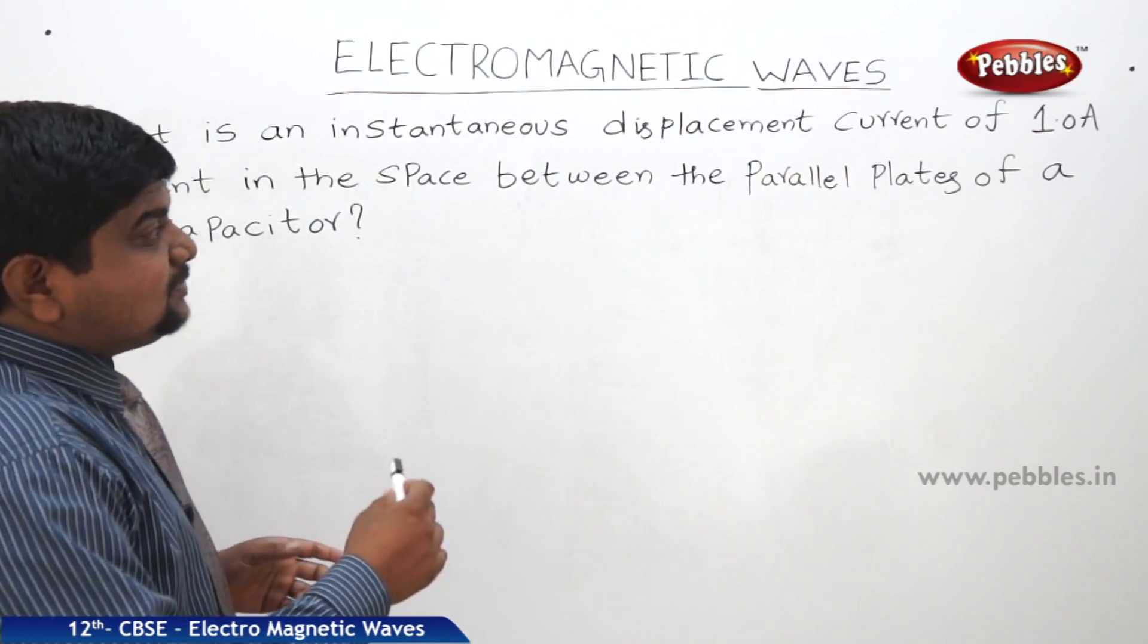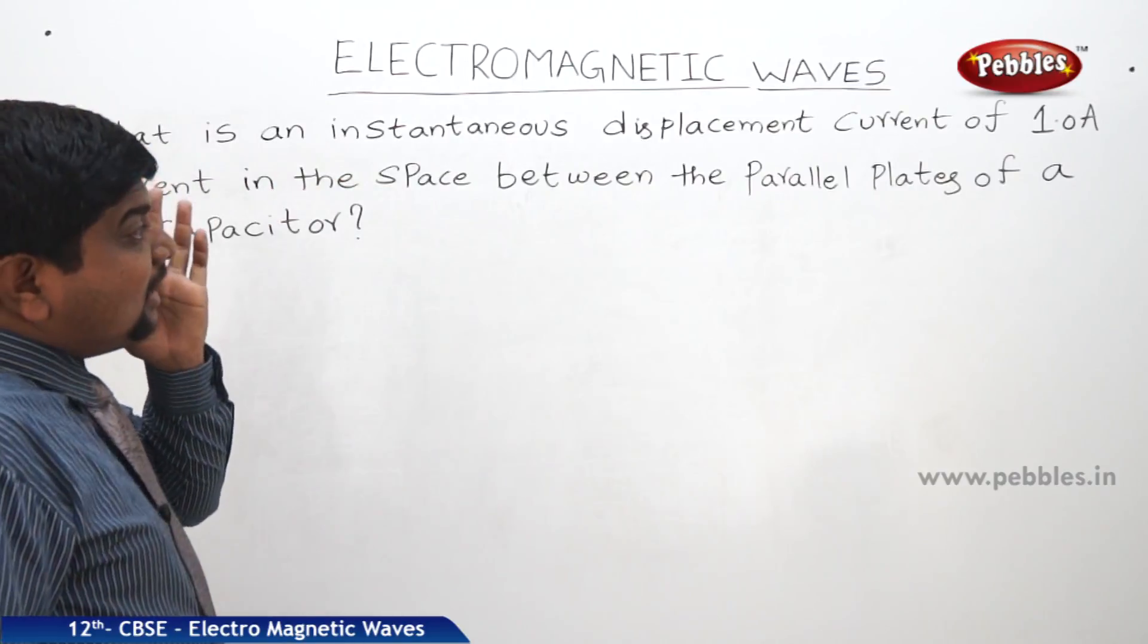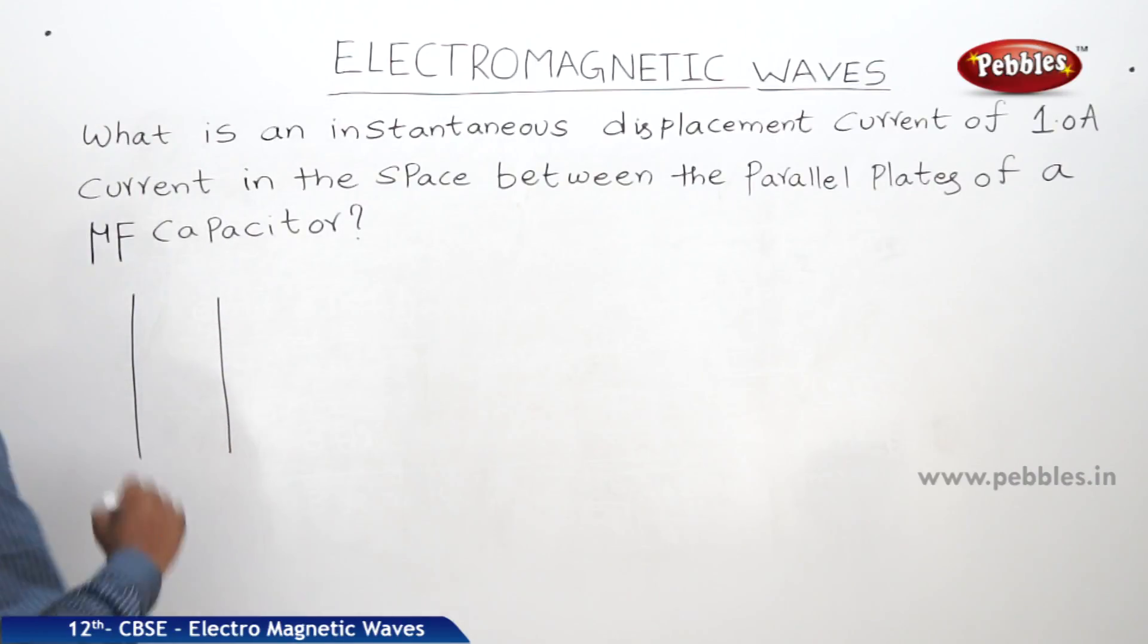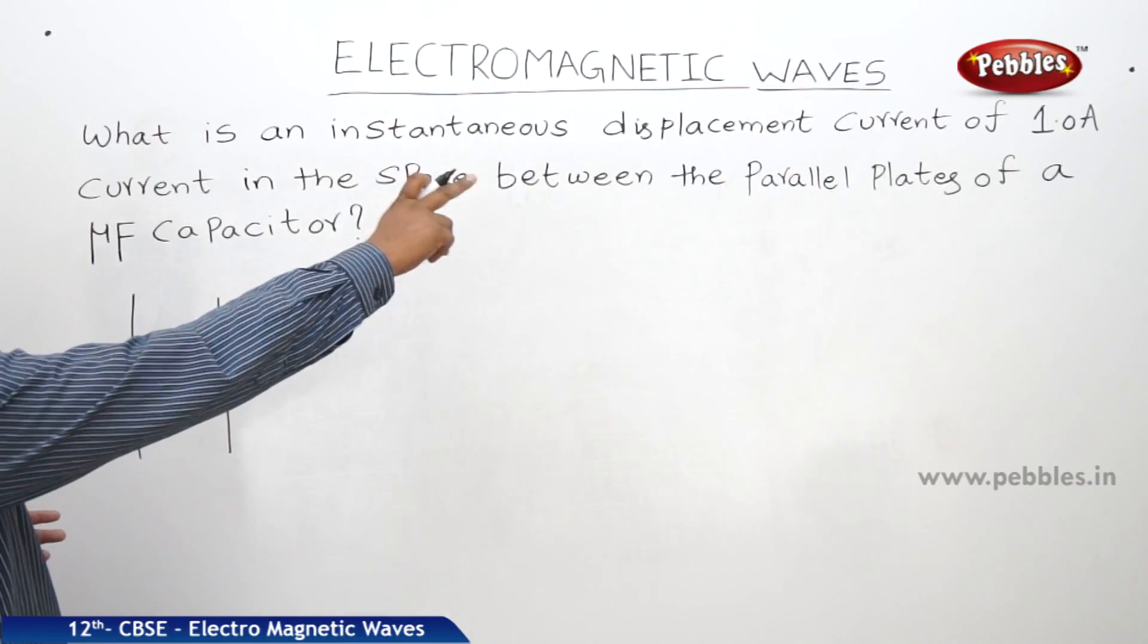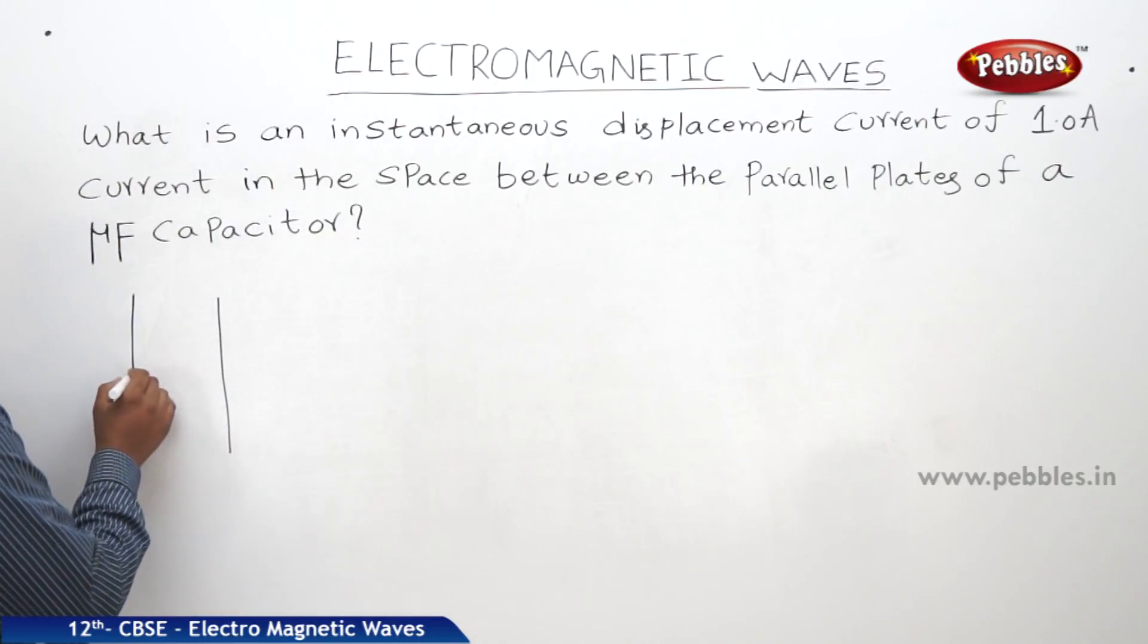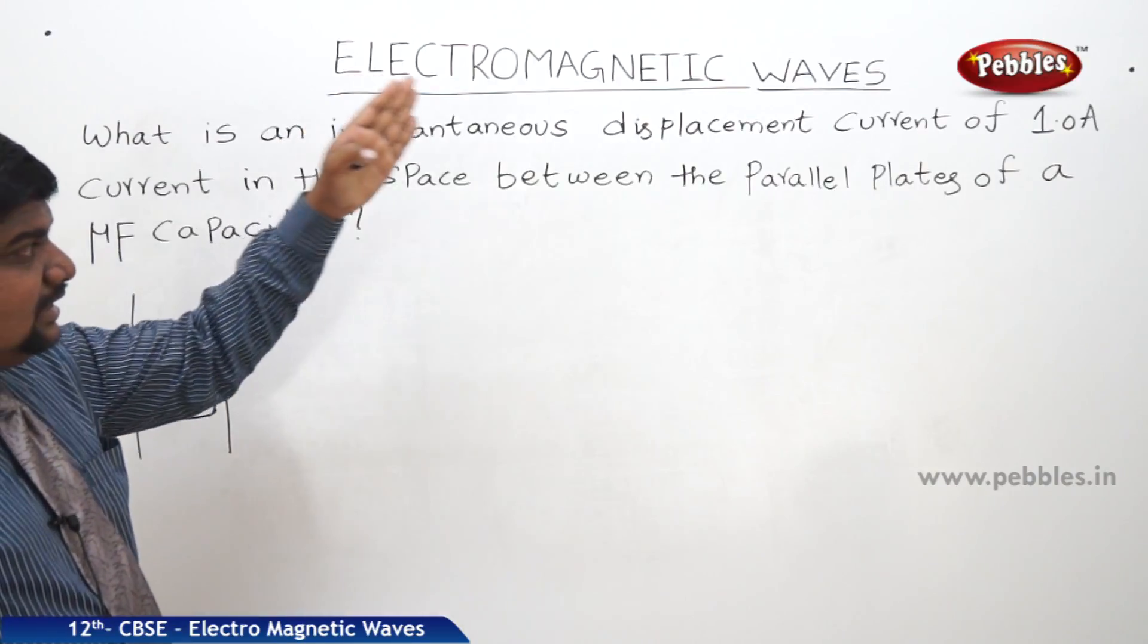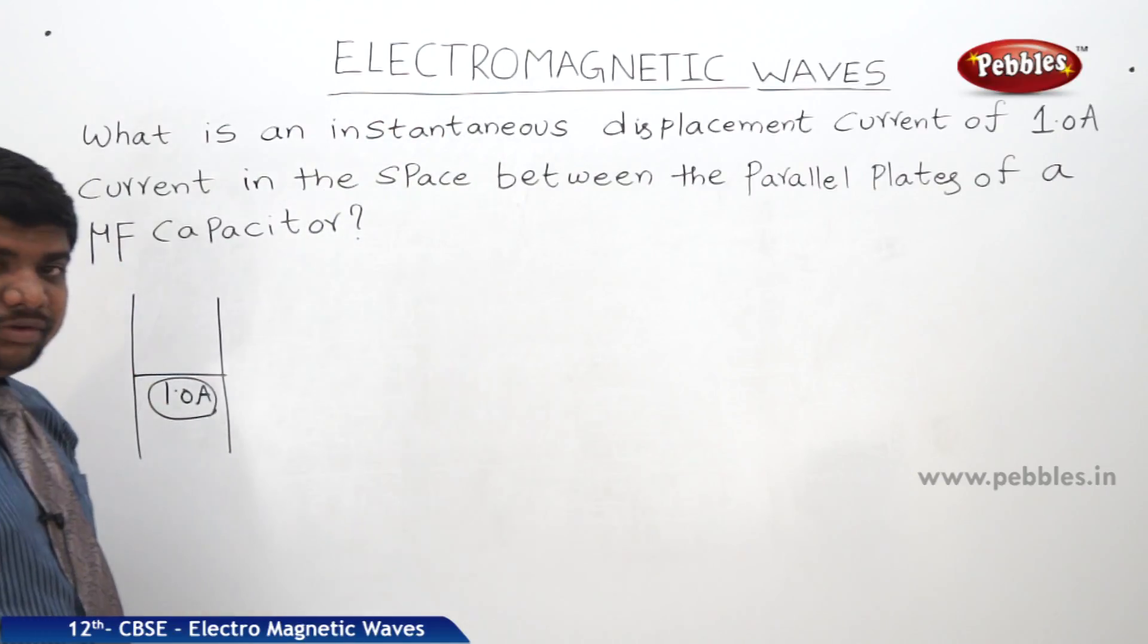What is an instantaneous displacement current of 1A current in the space between the parallel plates of a microfarad capacitor? Means, there is a capacitor which contains parallel plates. We should find out the displacement current of 1A current in the space between the parallel plates of a capacitor. Means, in this space the current is 1A. This is the conduction current. And what will be the displacement current for this rate? And its capacitance is 1 microfarad.